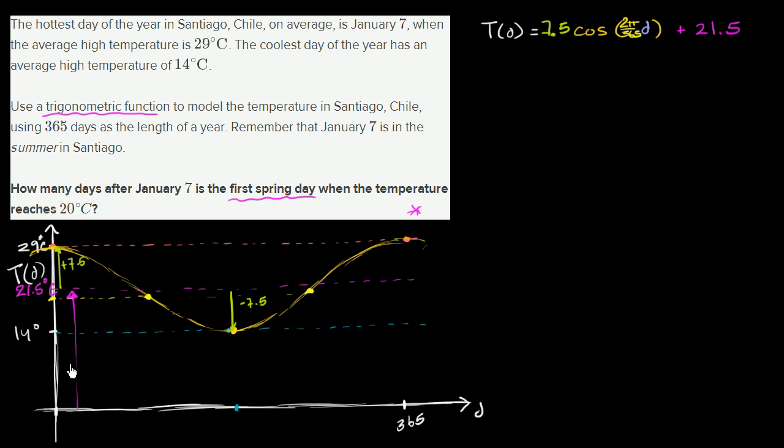Well, if this is summer right over here, we're in the southern hemisphere. So our summer is going to be when it's the winter in the northern hemisphere. What season comes after summer? This is going to be the fall. This is going to be the winter. Now this is going to be the spring. And then, of course, you go back to the summer.